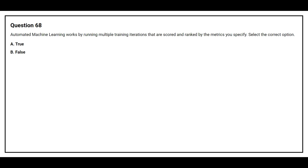Question 68: Automated machine learning works by running multiple training iterations that are scored and ranked by the matrix you specify. Select the correct option. Option A: True. Option B: False. The correct answer is Option A: True.